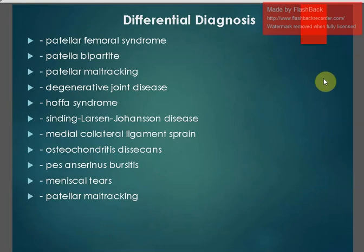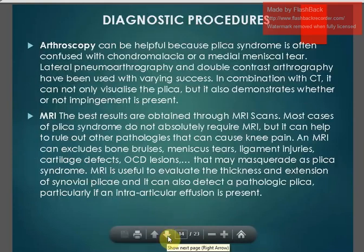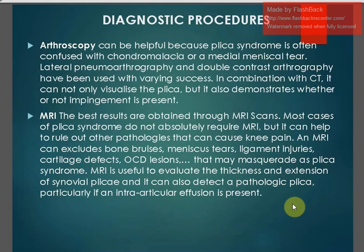We need to rule out other conditions that might produce the same kind of pain, including: patellofemoral syndrome, bipartite patella, patellofemoral maltracking, degenerative joint disease, Hoffa syndrome (fat pad inflammation), Sinding-Larsen-Johanssen disease, medial collateral ligament sprain, osteochondritis dissecans, pes anserine bursitis, meniscal tears, and patellar maltracking. These are some of the differential diagnoses to rule out. Since it involves soft tissue, arthroscopy and MRI will be best for diagnosis.